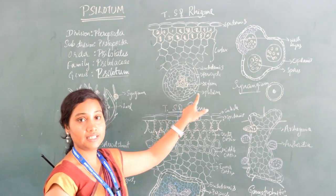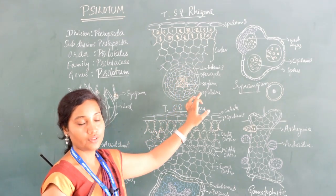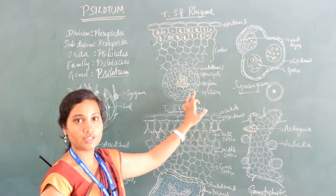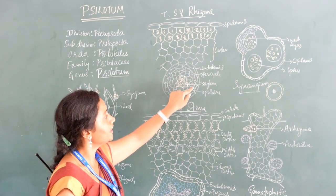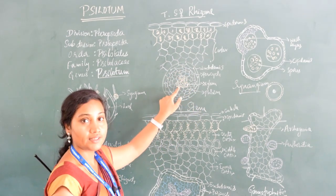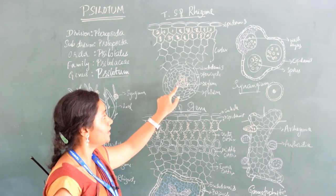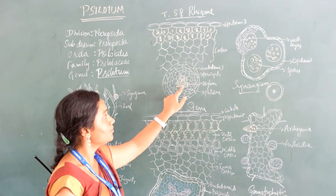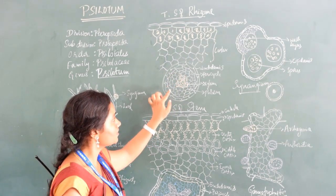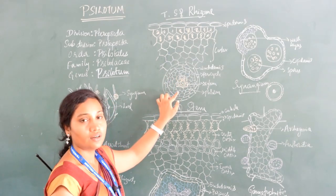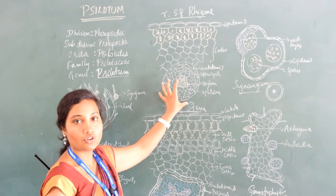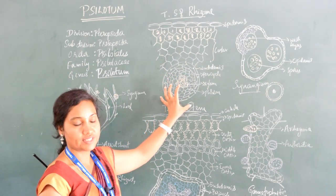The stele has an outer endodermis layer — a single endodermis layer followed by a single layer of pericycle. In the center, xylem elements are present. The central core of xylem is surrounded by phloem elements. This kind of stele is called a protostele.